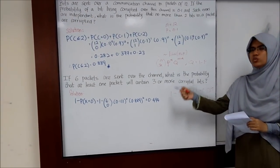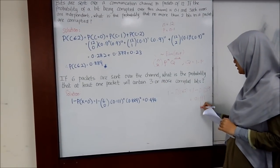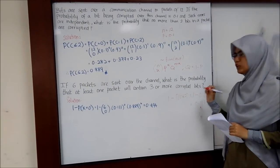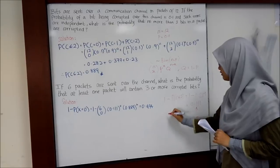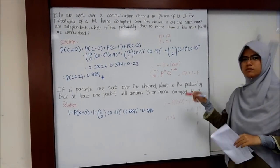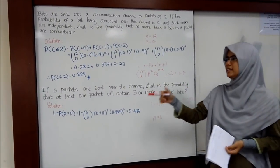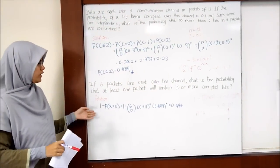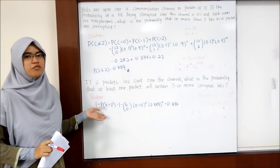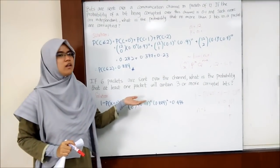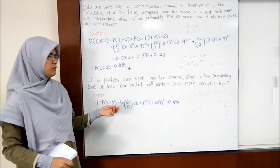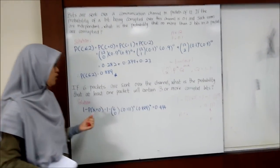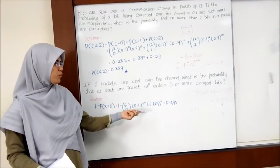Using the new parameters — new p equals 0.111 and new n equals 6 — we substitute into the formula to find the probability that at least 1 packet will contain 3 or more corrupted bits. The final answer is 0.494.